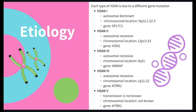Each of the types of HSAN is due to a different gene mutation. For type 1, the only autosomal dominant one, it occurs at chromosomal location 9q 22.1 to 22.3, and the gene affected is SPTLC1. For type 2, autosomal recessive, it occurs at chromosome 12p 13.33, and the gene affected is HSN2. For type 3, also autosomal recessive, the chromosomal location is 9q31, and the gene is IKBKAP. For type 4, also autosomal recessive, the chromosomal location is 1q 21 to 22, and the gene affected is NTRK1. For type 5, the transmission is not known, the chromosomal location is not known, but the gene affected is also NTRK1.